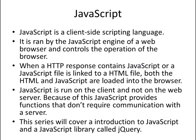We're going to move on to JavaScript now. JavaScript is a client-side scripting language. It is run by the JavaScript engine of the web browser and controls the operation of the web browser. When an HTTP response contains JavaScript, or a JavaScript file is linked to an HTML file, both the HTML and the JavaScript are loaded into the web browser. JavaScript is run on the client's machine, not on the web server. Because of this, JavaScript provides functions that don't require communication with a web server. This series will cover an introduction to JavaScript and a JavaScript library called jQuery.